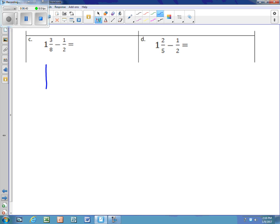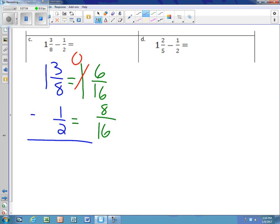We have 1 and 3/8 minus 1/2. Show it again in some color to help some of you out. Bring over the 1. 16 is my common denominator. 8 times 2 is 16, so 3 times 2 is 6. 2 times 8 is 16, so 1 times 8 is 8. I can't solve this because it's 6 minus 8, so I need to borrow. 16 needs to be added to 6, which would give me 22. 22 minus 8 would be 14/16.